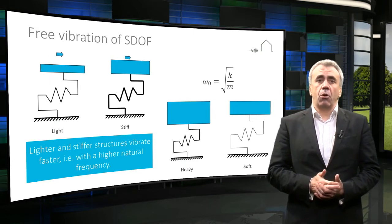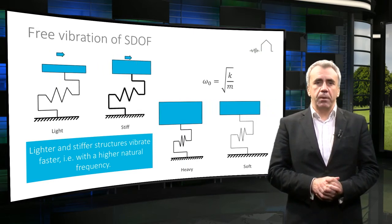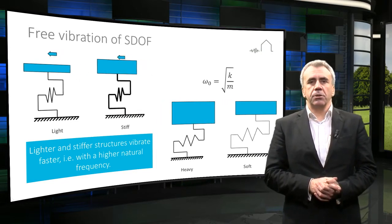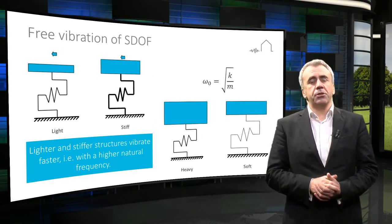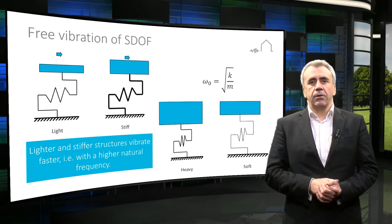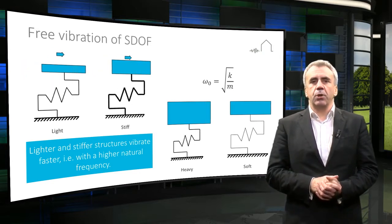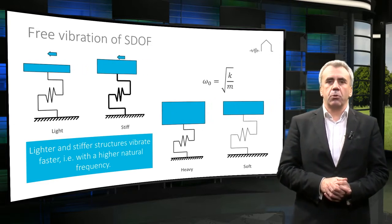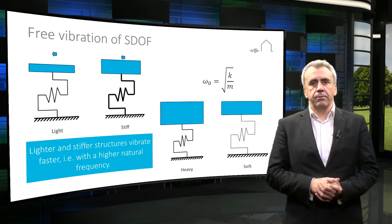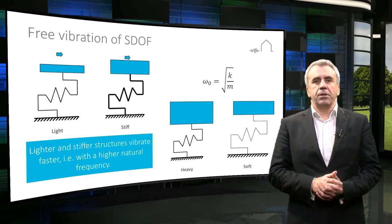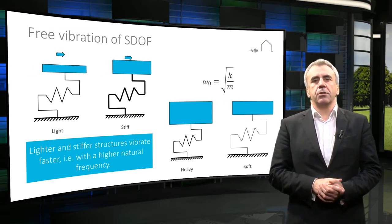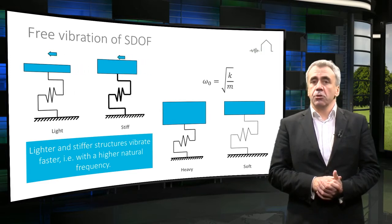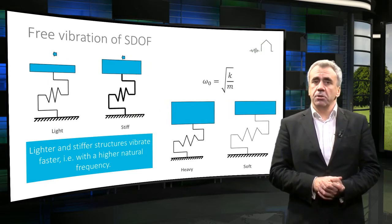The frequency of natural, or as we normally call it, free vibration, is larger the smaller the mass and the larger the stiffness of the building. Therefore, light and stiff structures shown in the left upper corner vibrate fast, whereas the massive and soft structures in the lower right corner of the slide vibrate slower. That's important to remember.